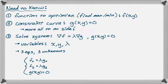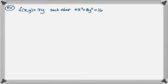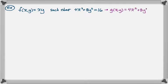So let's actually do the example. f(x,y) = x·y, such that 4x² + 8y² = 16. We're not explicitly given g(x,y), so let's work that out. Moving the 16 over, g(x,y) = 4x² + 8y² − 16, and g(x,y) = 0. That's where our constraint curve comes from.